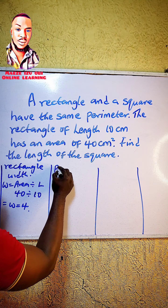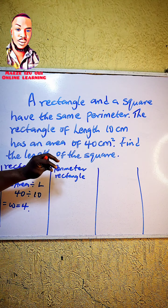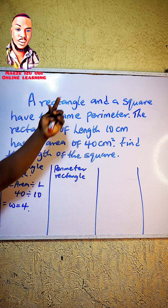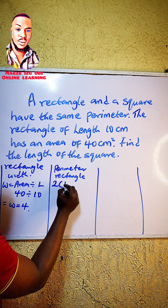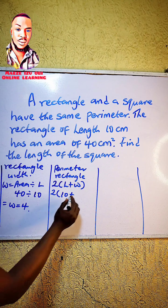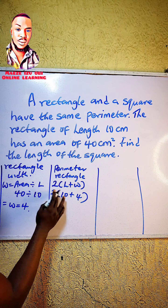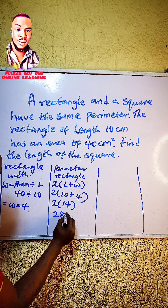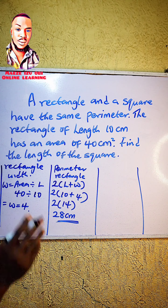Next, we are going to solve for the perimeter of the rectangle. We do this because the question says the rectangle and the square have the same perimeter. The formula is 2 × (length + width), which is 2 × (10 + 4). That gives us 2 × 14, which equals 28 centimeters. So the perimeter of the rectangle is 28 centimeters.